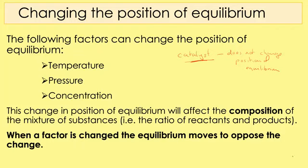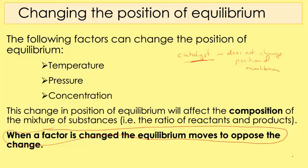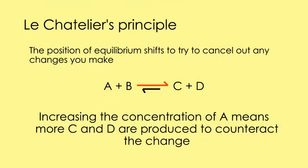The important principle here is Le Chatelier's principle: when a factor is changed, the equilibrium moves to oppose the change. So if we increase the temperature, the equilibrium will shift to decrease the temperature. If we increase the pressure, it will shift to reduce the pressure. If we increase the concentration, it will shift to reduce the concentration. The position of equilibrium shifts to try to cancel out any changes you make.